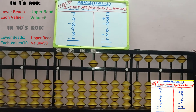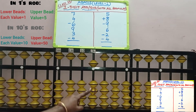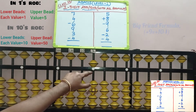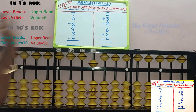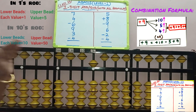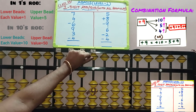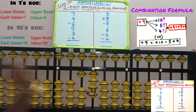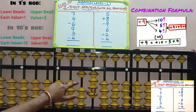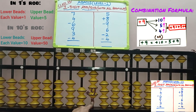Fourth row, plus 9 — we need to add 9 beads in the 1 slot. Only 4 beads are available, so direct addition is not possible. Big friend is also not possible because 9's big friend is 1; we cannot remove the friend of 9. Hence, apply combination formula. Combination plus means move beads in the up direction — 10 up, 5 up, and 5 plus 4 equals 9, so move 4 beads up. 9 is added with plus 10 minus 5 plus 4.